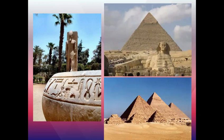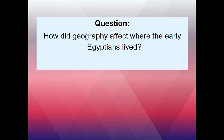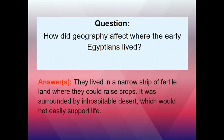Egypt is well known for its pyramids, and there are lots of different ones we'll get into later. A key question to consider is: how did the geography affect where the early Egyptians lived? The answer is mostly due to the fact that the Nile River provided a narrow strip of fertile land, so they stayed with the river — which makes sense given that they're surrounded by desert.